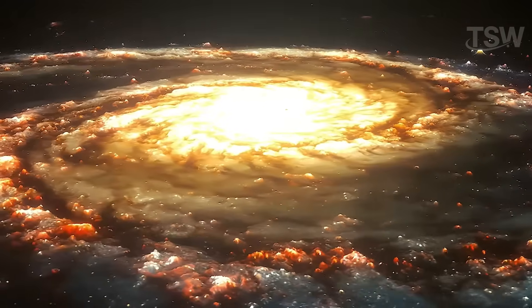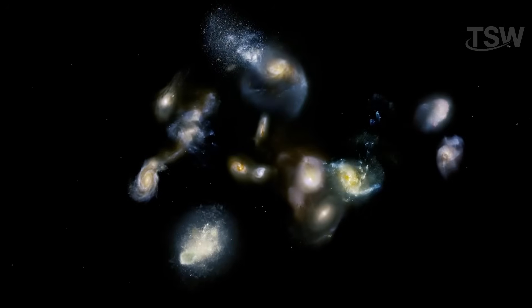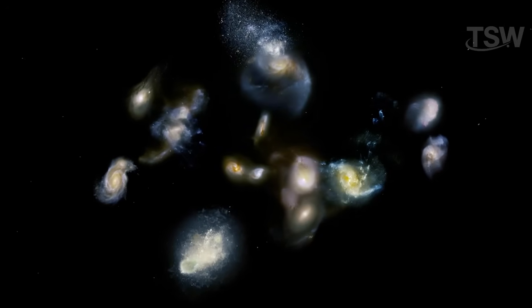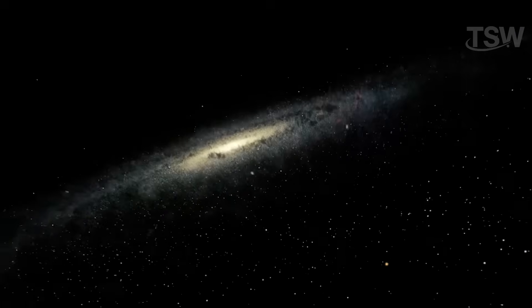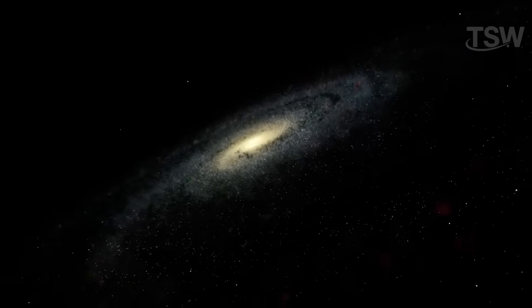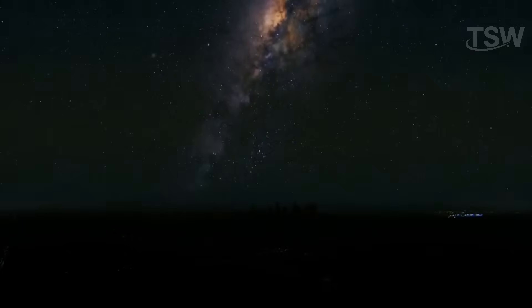Because we're so far from the core, we've ended up understanding other galaxies better than our own. It was only in recent years, for example, that we discovered the Milky Way is actually a barred spiral galaxy, meaning it has a central bar-shaped structure, not just spiral arms.